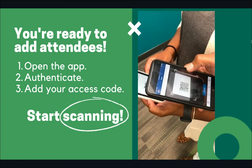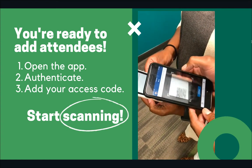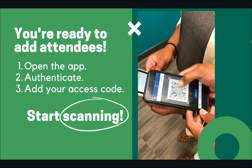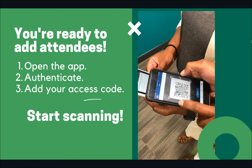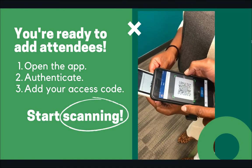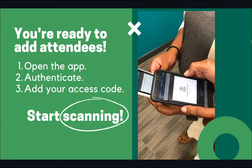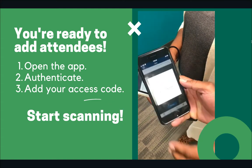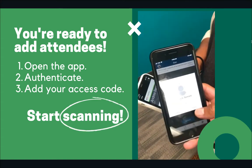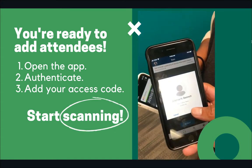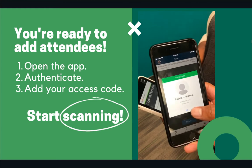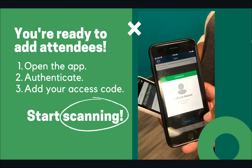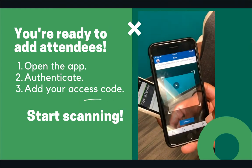Position the edges of the box over the attendee's event pass. As soon as it recognizes the user, it will display a box with their basic details, including their RSVP status. Tap Check-In to confirm the user and click OK to continue scanning.